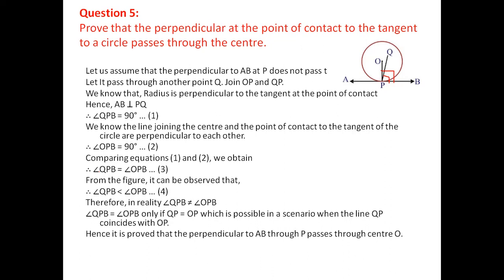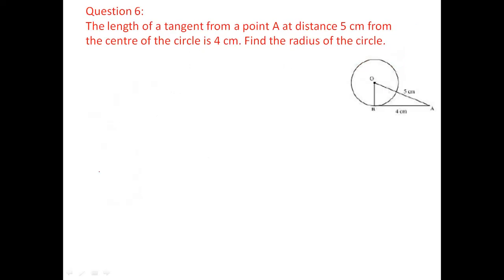From question 6 onwards, all questions are important, so concentrate carefully. Question 6: the length of a tangent from a point A at a distance of 5 centimeters from the center of a circle is 4 centimeters. Find the radius. The radius is perpendicular to the tangent at the point of contact, so triangle OBA is a right triangle.